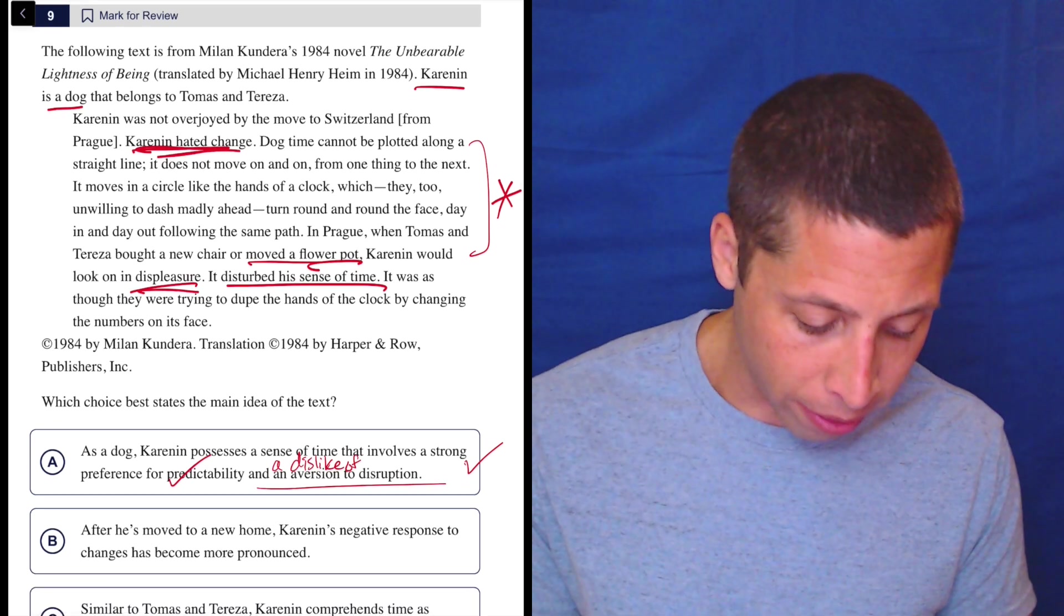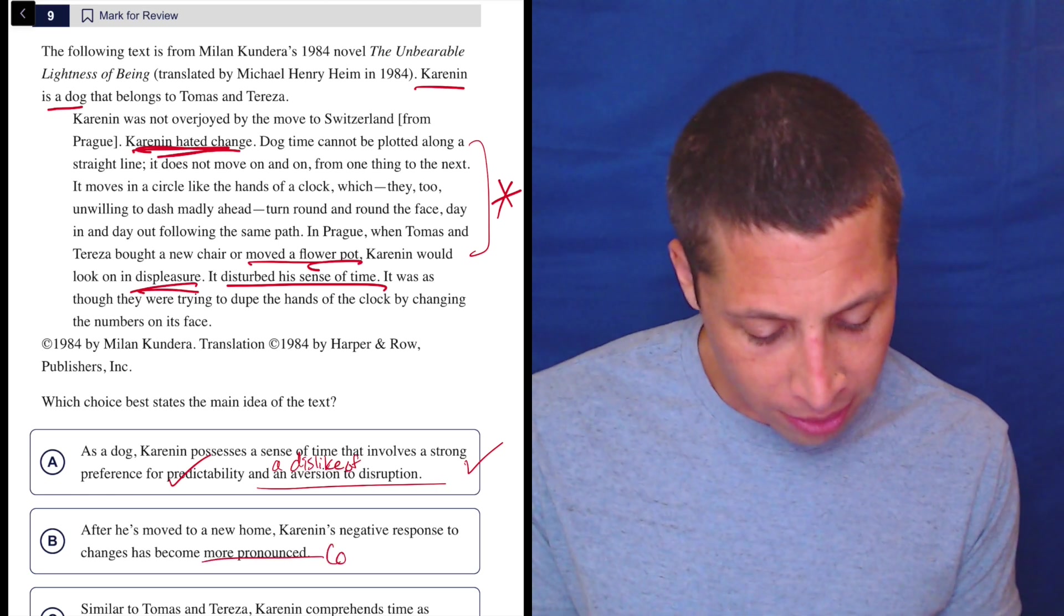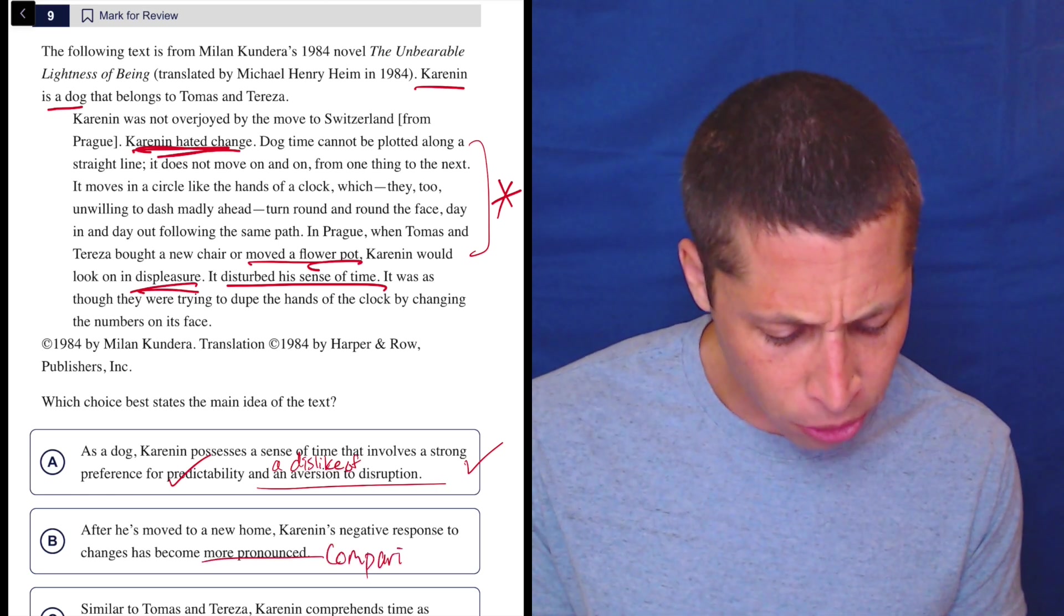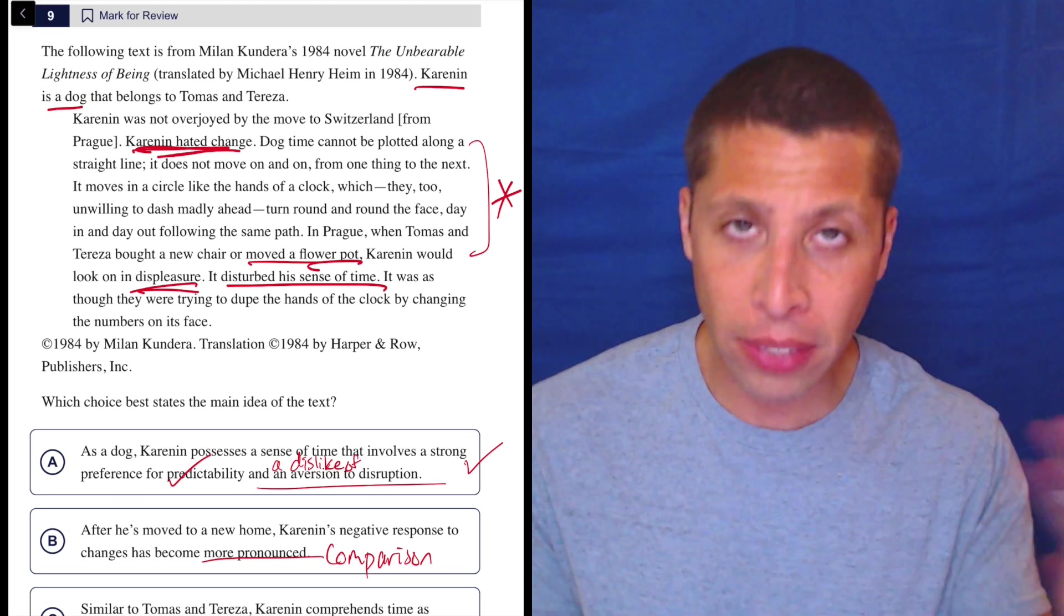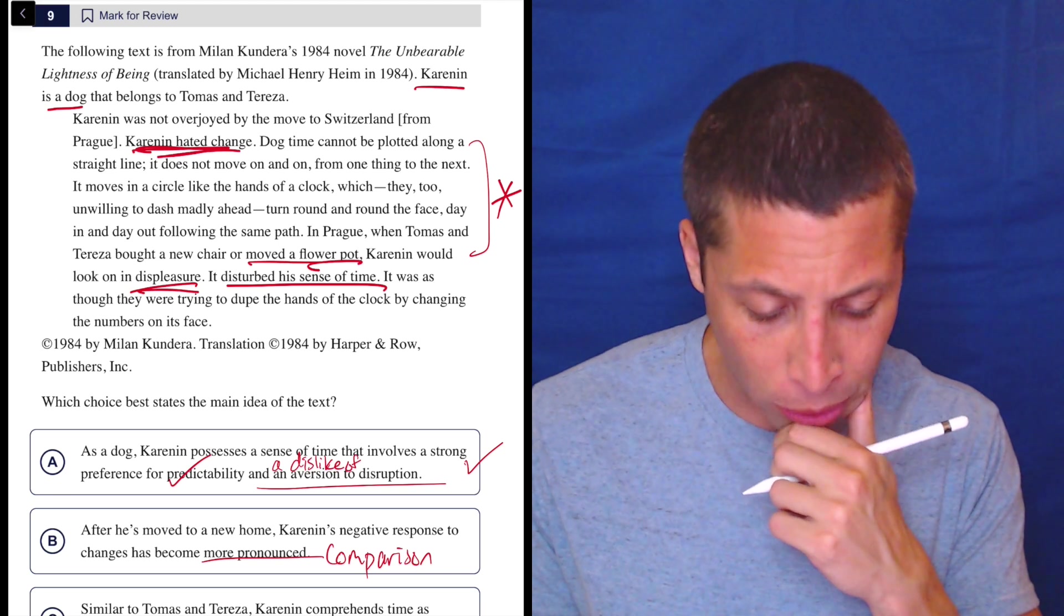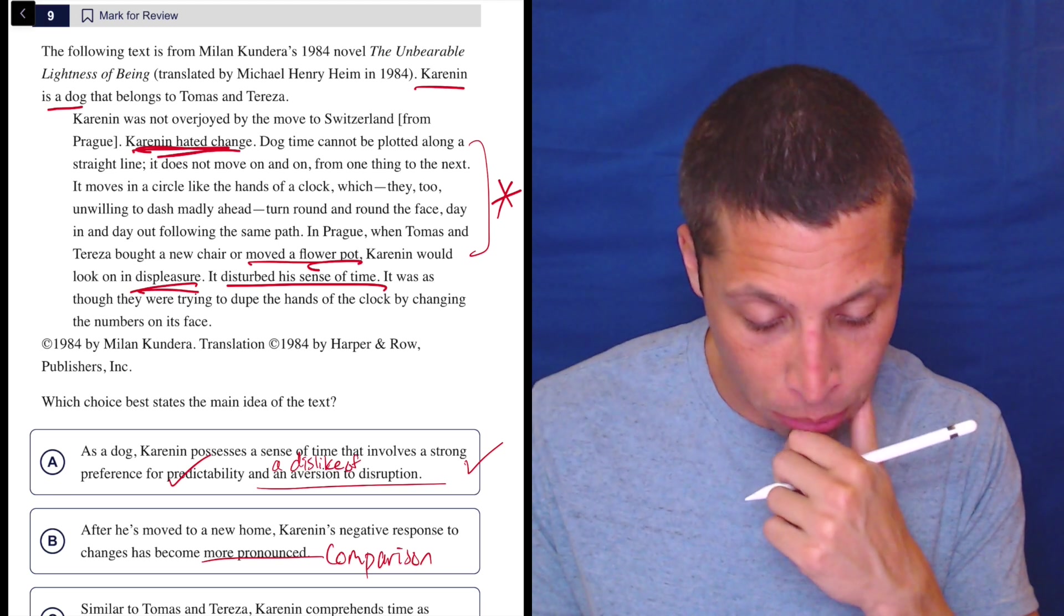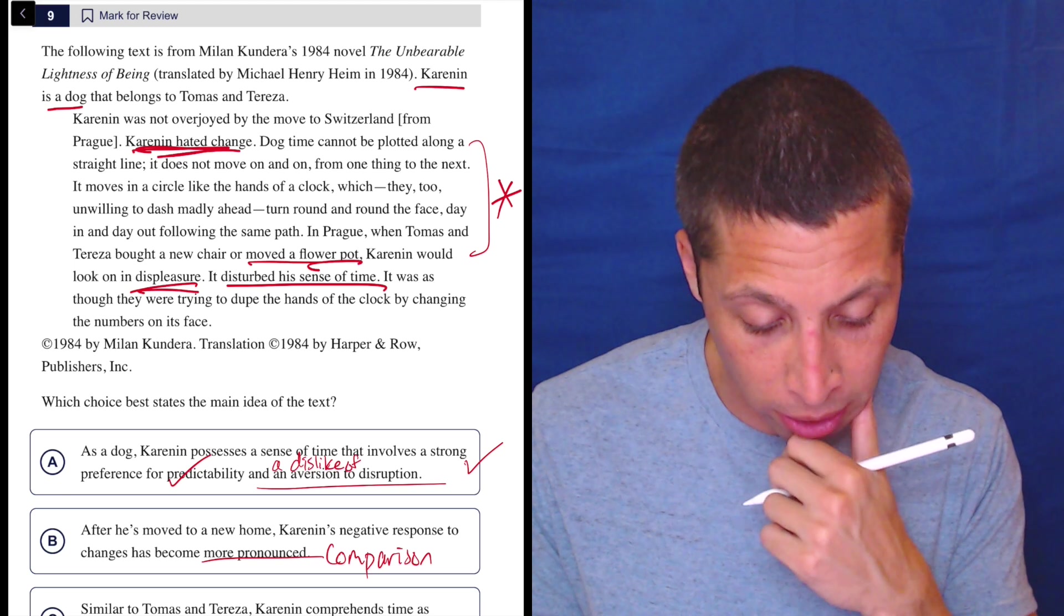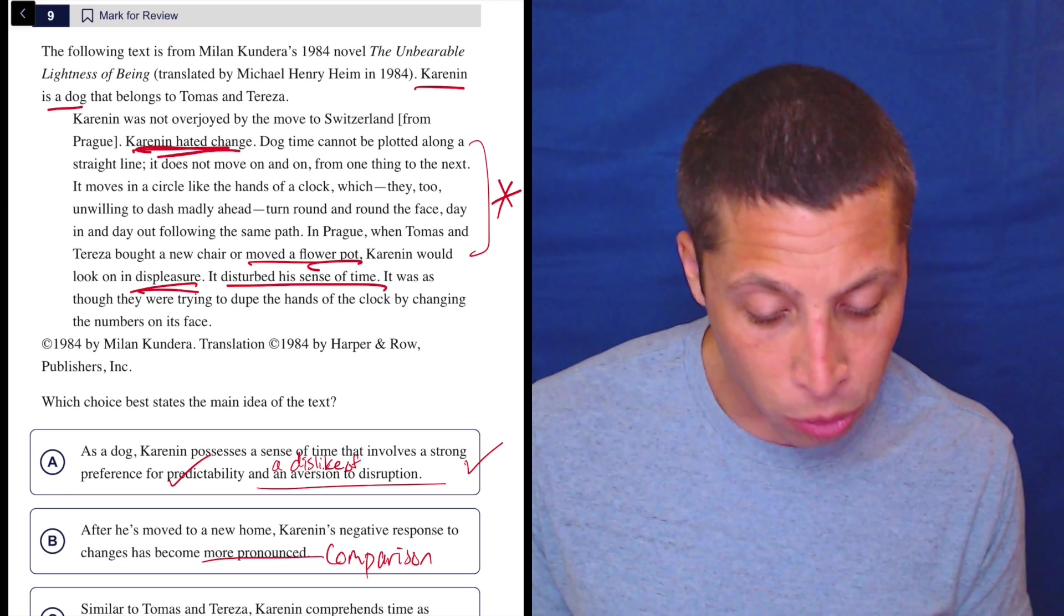B. After he's moved to a new home, Karenin's negative response to changes has become more pronounced. More pronounced. That's a comparison. So more pronounced than what? I guess are we talking about a previous time? They are talking about a move to Switzerland. I see that. Then there's the thing about the dog time. In Prague, when Thomas and Teresa bought a new chair, Karenin would look on in displeasure, disturbing sense of time. So Prague was the first place, right?